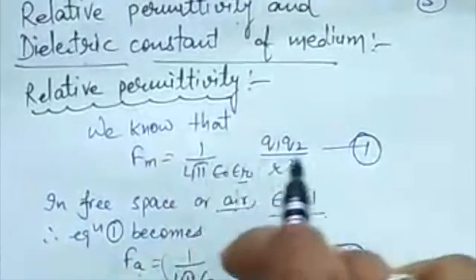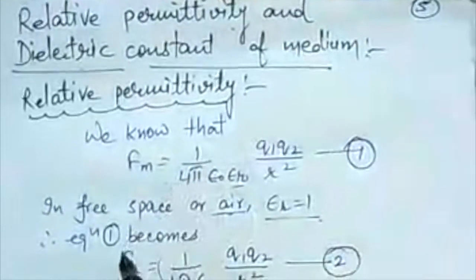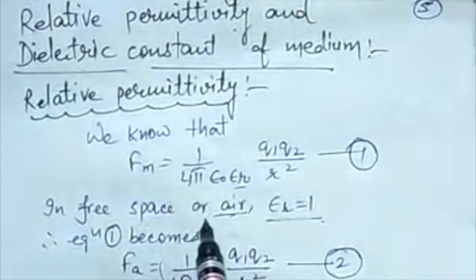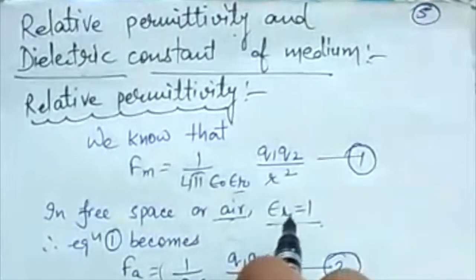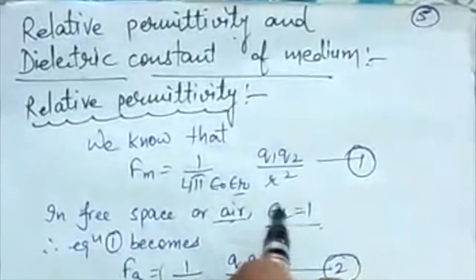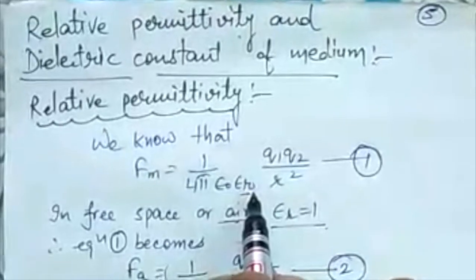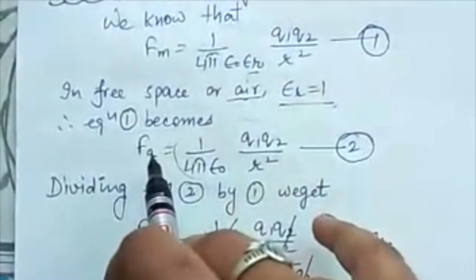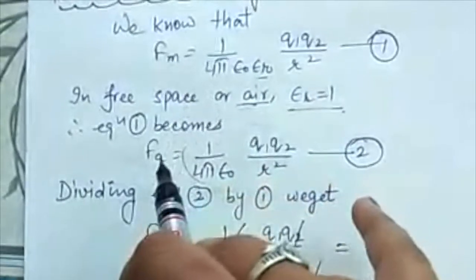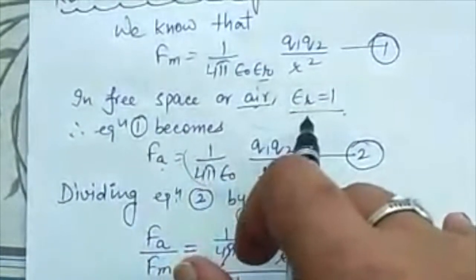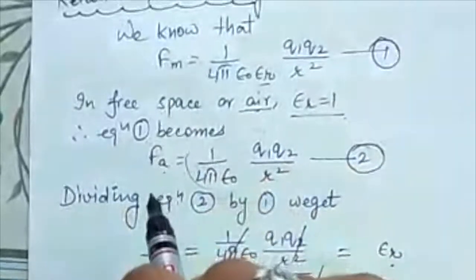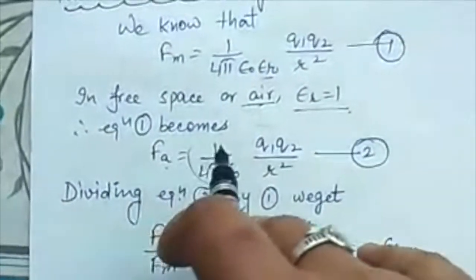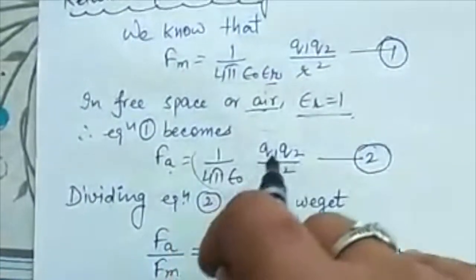In free space or air, we have epsilon r is equal to 1. So let's put this equal to 1 in the first equation. So you get equation number 2 as Fa, now because we have replaced Fm as Fa by putting epsilon r equal to 1. So Fa will be 1 upon 4 pi epsilon 0 q1 q2 upon r square.